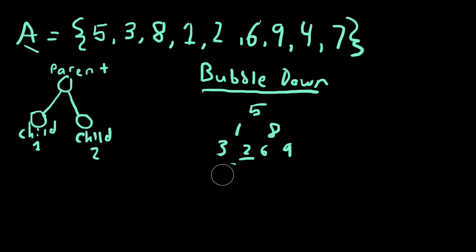8 has children 6 and 9, with the minimum being 6. 6 swaps with 8, and there's no need to continue because there are no further children over here.